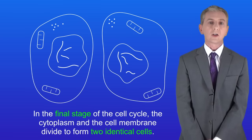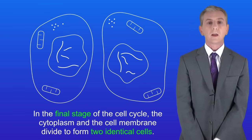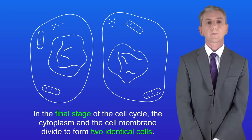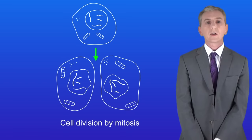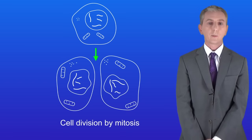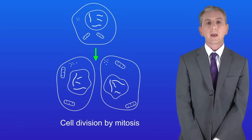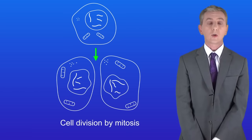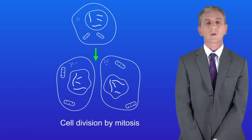In the final stage of the cell cycle, the cytoplasm and the cell membrane divide to form two identical cells. So at the start we had one cell with two pairs of chromosomes, and at the end we have two identical cells, each again with two pairs of chromosomes.